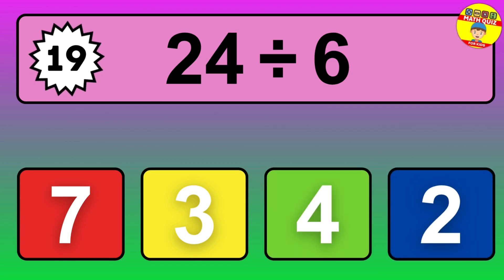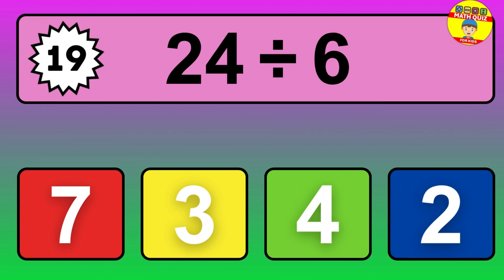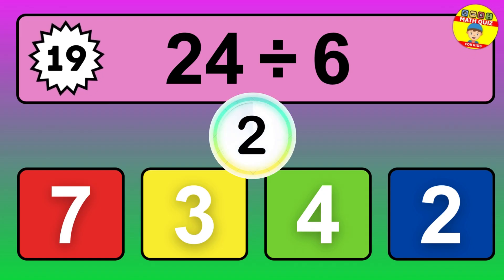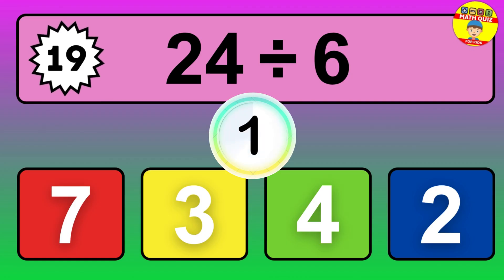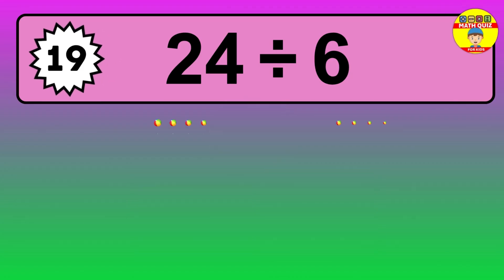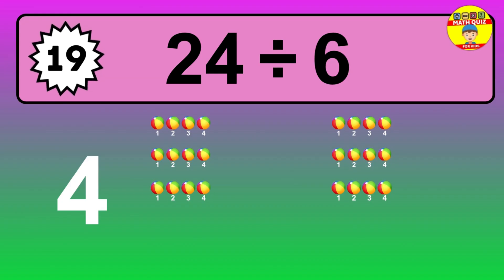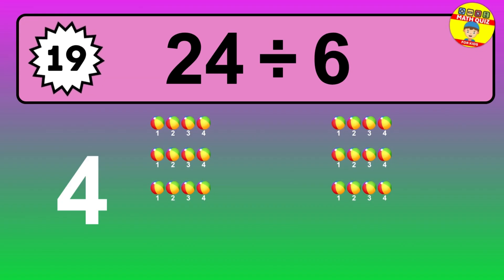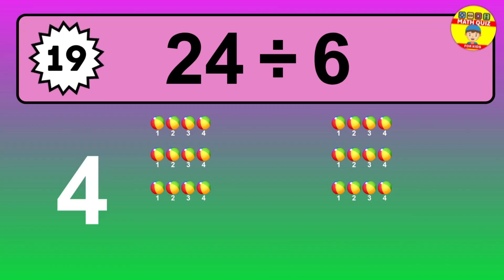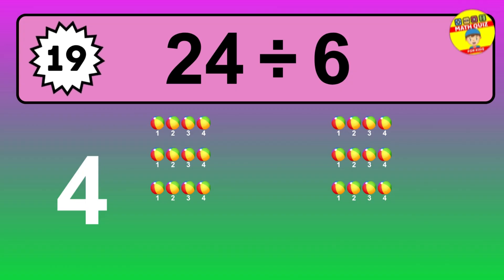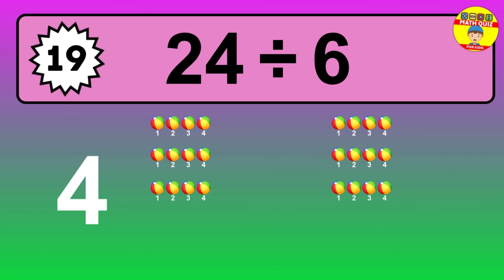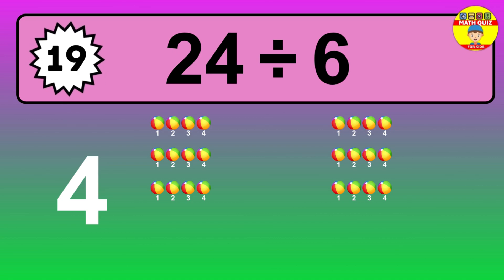24 divided by 6 — time to think. Let's go to the solution. Divide the number 24 by 6. Each group contains 6 units, so dividing 24 by 6 results in 4 equal groups. Thus, the result is 24 divided by 6 equals 4.